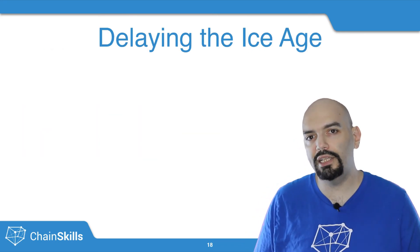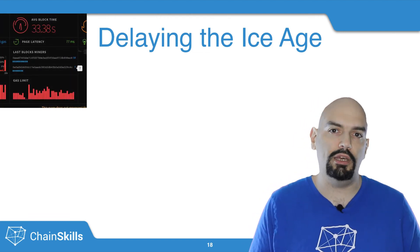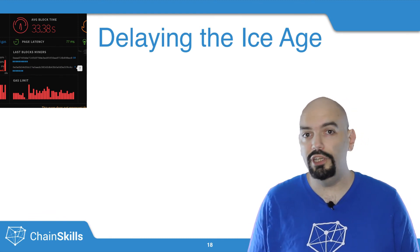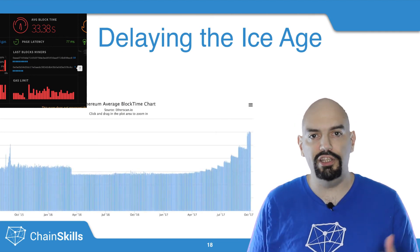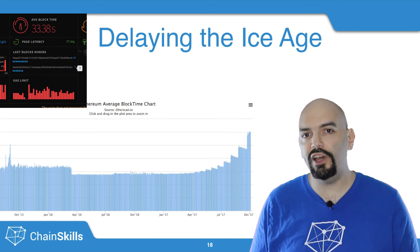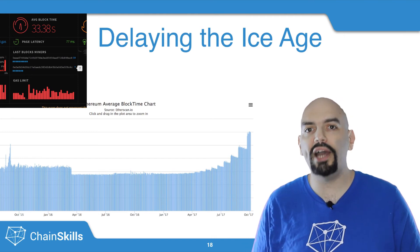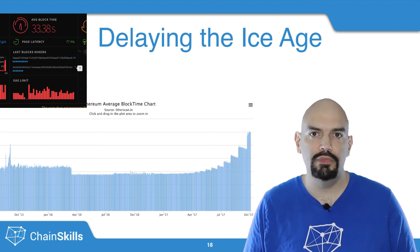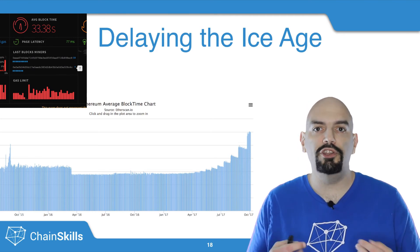If you go to a site like ethstats, you'll notice that we are already far away from the 12.5-second theoretical average block time. At the time of this recording, it's actually closer to 34 seconds. So in effect, the difficulty bomb has already kicked in and we are already in the ice age. With Byzantium, the difficulty bomb timer is going to get reset and the network will go back to a faster block time of around 12.5 seconds, and the ice age will be delayed another 1.4 years to give time for the next hard fork to be ready.